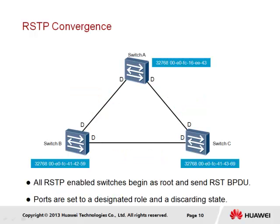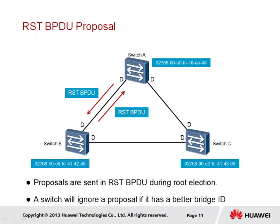The general convergence process of an RSTP-based topology follows the same principles of spanning tree, in which all switches assume the status of root bridge at the point of initialization and must communicate with neighboring switches to assert this status. The port role of each switch is again set as designated and operates initially in a discarding state. The method used to achieve convergence, however, differs from that of the spanning tree protocol. The convergence process is initiated by each switch sending RSTP BPDU via designated port interfaces.